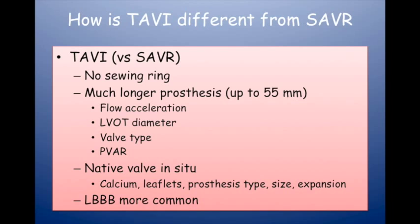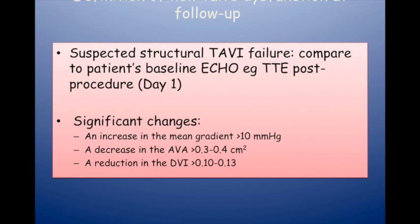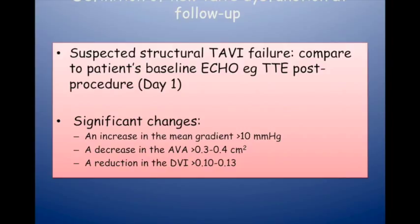How do you tell whether there's been a significant change in valve function? You look at your baseline study — day one after the TAVI procedure — and compare subsequent studies to it. What constitutes a significant change? A mean gradient increase of more than 10 mm Hg, a decrease in aortic valve area of more than 0.3 cm², and a reduction in the Doppler Velocity Index of more than 0.1, which we look at when there are discordant results between gradient and area.